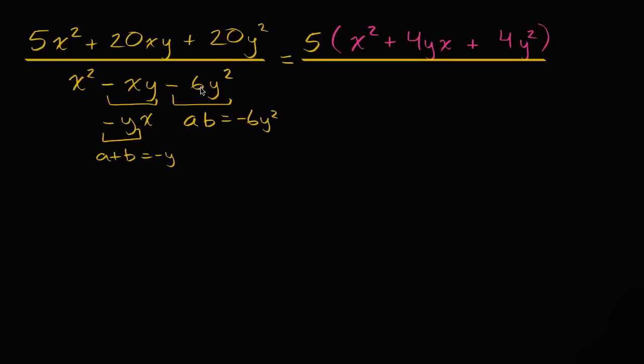And let's see, if we did negative three y and positive two y, that indeed is going to be equal to negative six y squared. And negative three y plus two y does indeed equal negative y. So that's our a and b right up there.